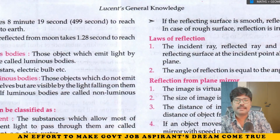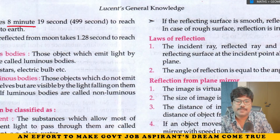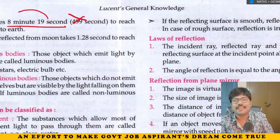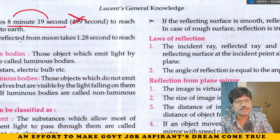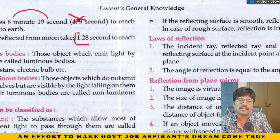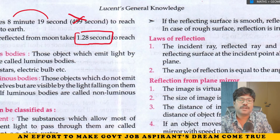Important facts: Light takes 8 minutes and 19 seconds to reach from the sun to the earth. Light reflected from the moon takes 1.28 seconds to reach the earth.